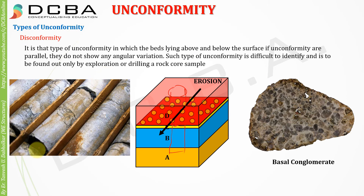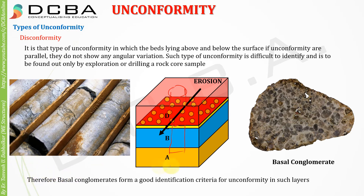Basal conglomerates form a good identification criterion for unconformity in such layers, because in these cases you cannot see any angular variations and must rely on drilling bore holes for exploration.